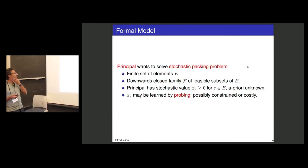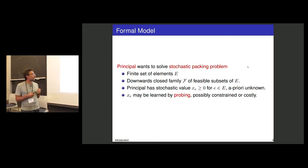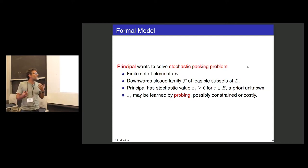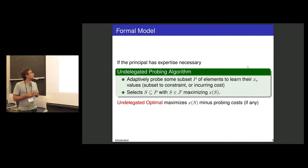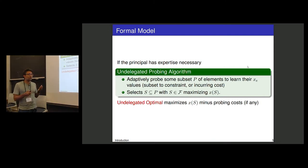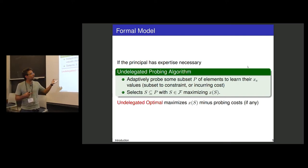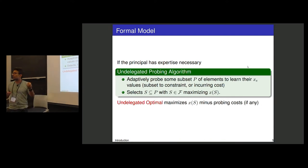Our principal faces a stochastic packing problem. You have a finite set of elements, a downwards-closed feasibility constraint, and for each element the principal has a stochastic value drawn from a known distribution, but the value itself must be probed. The value may be probed, and this probing may be constrained or costly. If the principal could do the probing themselves, they would run a stochastic probing algorithm, adaptively probing some subset of elements to learn their values, then selecting a feasible subset of probed elements that maximizes utility — optimally trading off utility versus probing costs.